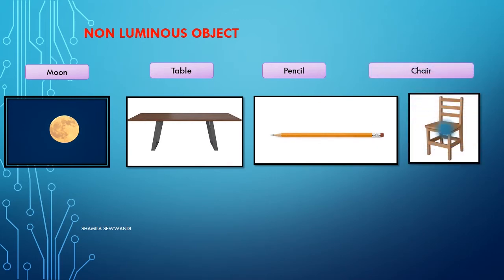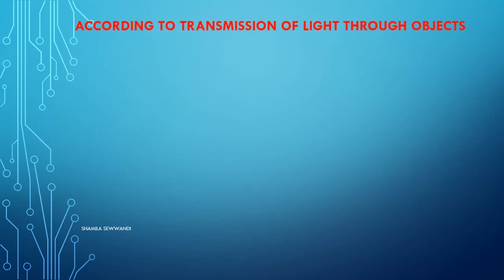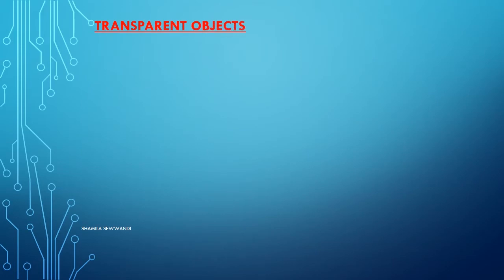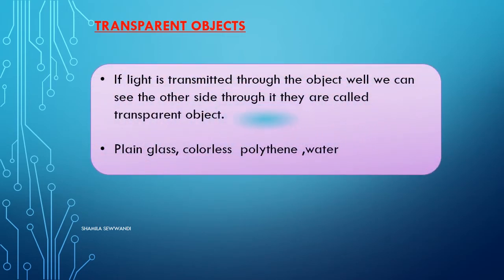According to the transmission of light through objects, objects can be divided into three parts. Transparent objects: if light is transmitted through the object well, we can see the other side through it. They are called transparent objects.